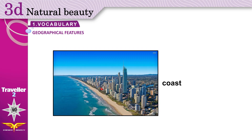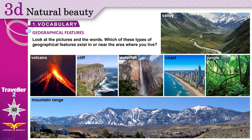Coast: the area where the land meets the sea. This is land, this is sea, and they meet — where? At the coast. Now repeat after me: valley, volcano, cliff, waterfall, coast, jungle, mountain range. Which of these types of geographical features exist in or near the area where you live?